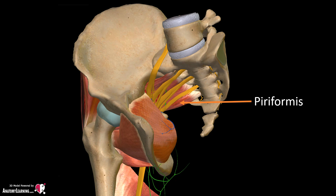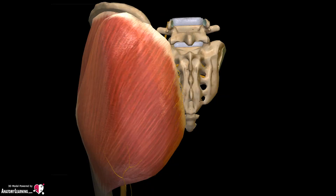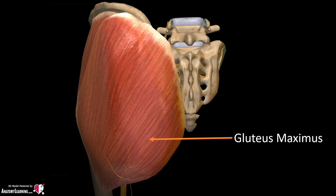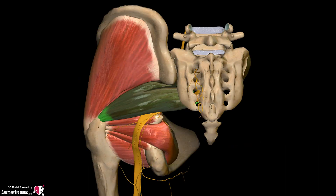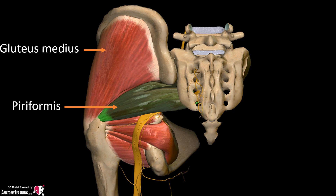A few smaller nerves remain within the pelvis. The gluteal region, when viewed from behind, shows the gluteus maximus covering the ileum. When the gluteus maximus is reflected, the muscles underneath are the gluteus medius and then the piriformis. Inferior to the piriformis lie the major branches of the sacral plexus.